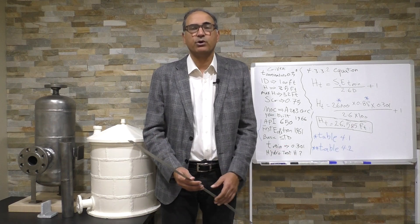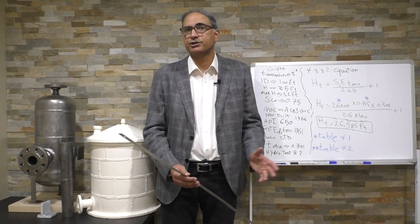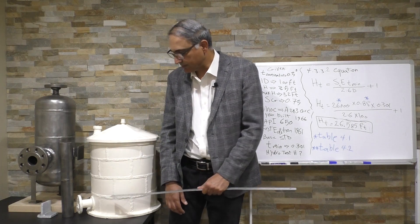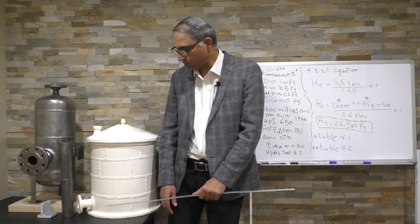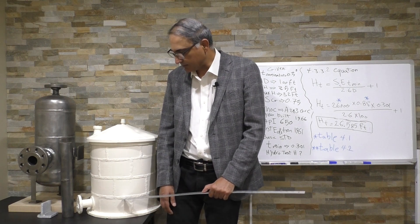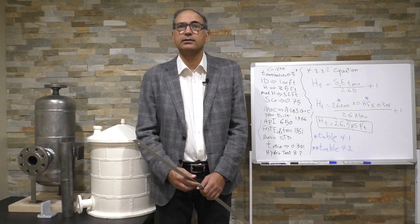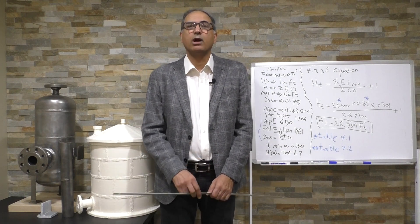It's considered 0.15 or 0.2 as minimum required thickness, and we need to replace this shell course. So we replaced this shell course, cut it off, replaced the new shell, and made the welding.